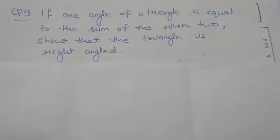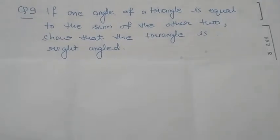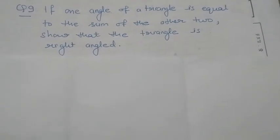If one angle of a triangle is equal to the sum of the other two, then show that the triangle is right angled.